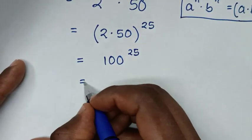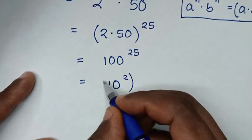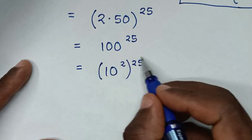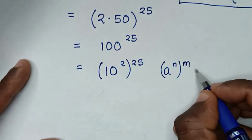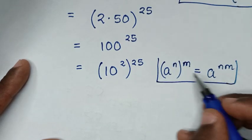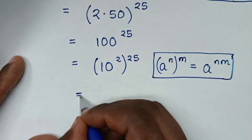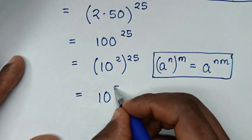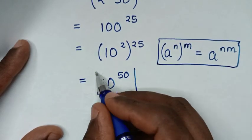In the next step, 100 is the same as 10 squared, bracket to the power of 25. This is in the form of (a^n)^m, which is equal to a^(n times m). So we apply this form: 10 to the power of 2 times 25, which is 10 to the power of 50. So 10^50 is our final answer.